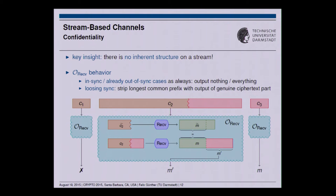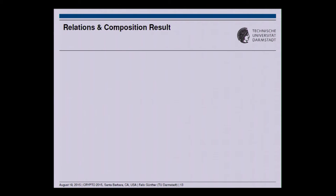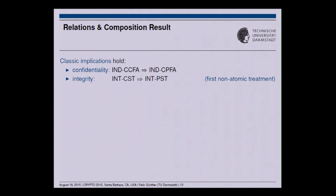For the TLS example, the unmodified part would still be a common prefix, whereas the scrambled part goes to the adversary. Coming to the relations of the notions we define: the classic implications still hold — chosen ciphertext security implies chosen plaintext security for confidentiality, and ciphertext stream integrity implies plaintext stream integrity. This is also the first non-atomic treatment of integrity, as the 2012 ciphertext fragmentation work focused only on confidentiality.